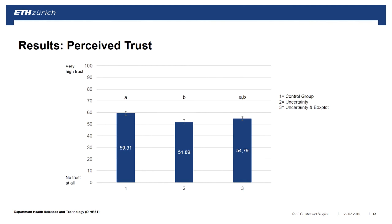But again — does it have an impact on trust? This time we had a clear, significant effect: the difference between the control group and the numerical uncertainty group showed a significant decrease in trust. The box-plot group showed no significant difference from either other group. If we hope to increase trust by providing uncertainty, this graph is disappointing — all you may achieve is no difference, and if you're unlucky, a decrease in trust. That's not what was intended.